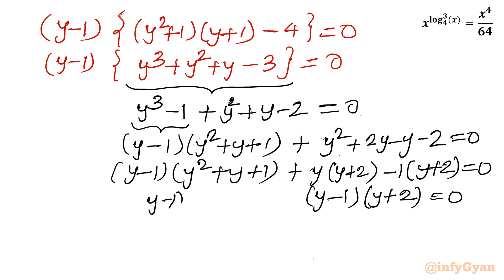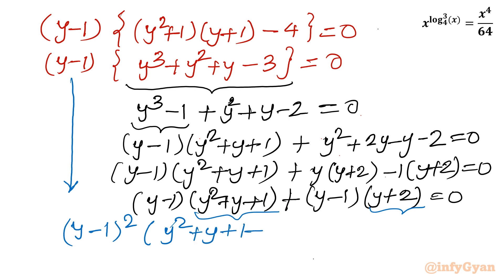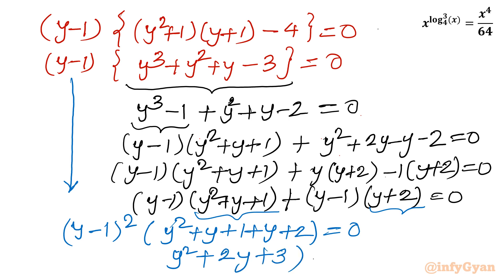Taking (y − 1) common from the cubic: (y − 1)[(y² + y + 1) + (y + 2)] = (y − 1)(y² + 2y + 3). Combined with the earlier (y − 1) factor from the quartic, the full factorization is (y − 1)² (y² + 2y + 3) = 0.